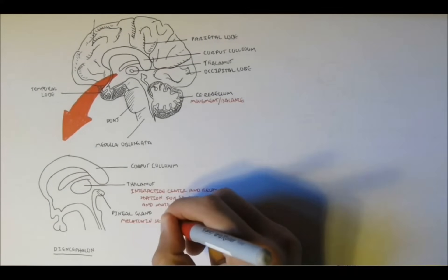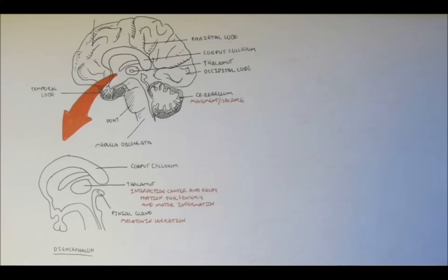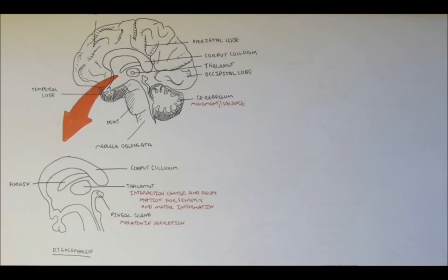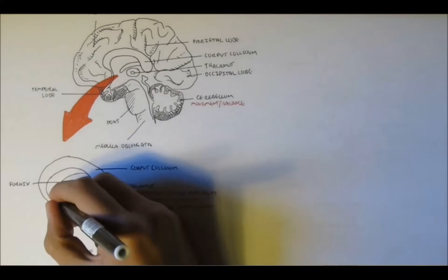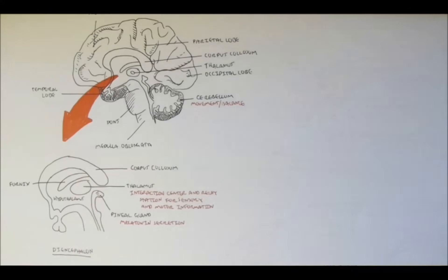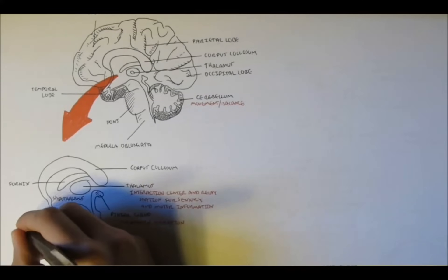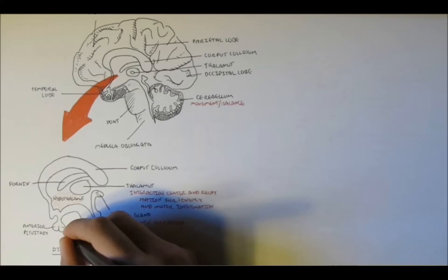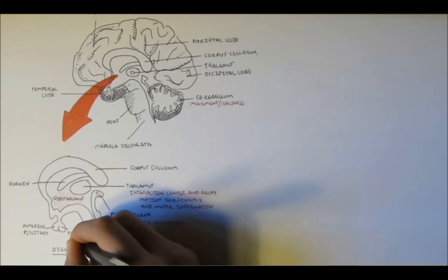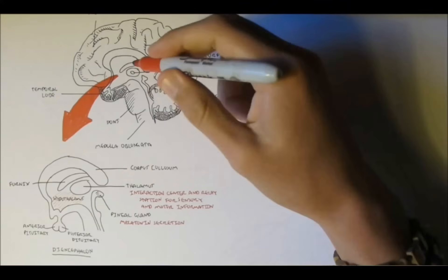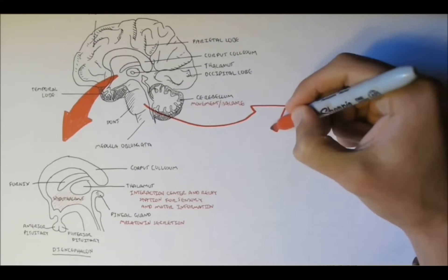Right next to the thalamus is what's referred to as the pineal gland or epithalamus, and it secretes a hormone called melatonin. Above the thalamus, wrapping around it, is the fornix, and it's important in the limbic system. Around this area is also the hypothalamus, which is a major endocrine gland. Underneath the thalamus we have the anterior pituitary gland and the posterior pituitary gland, also major endocrine glands. The hypothalamus and pituitary glands are important in keeping our body in equilibrium and maintaining homeostatic conditions.